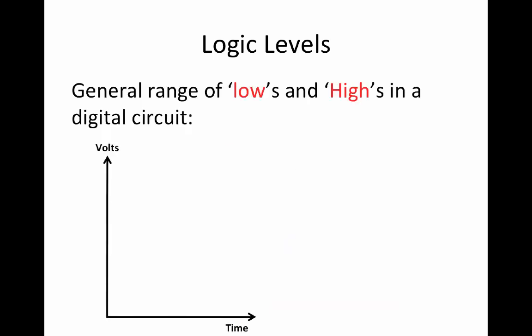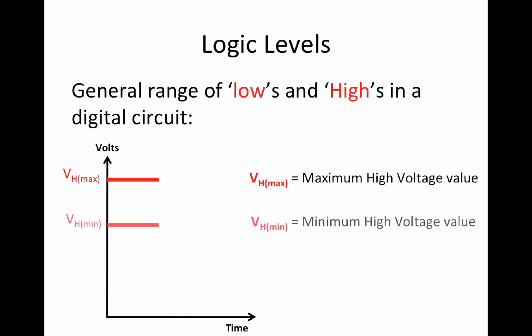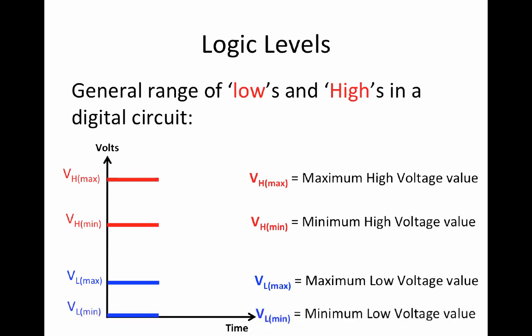Let's illustrate the general range of lows and highs for a digital circuit. The variable VHmax represents the maximum high voltage value. VHmin represents the minimum high voltage value. VLmax represents the maximum low voltage value. VLmin represents the minimum low voltage value.